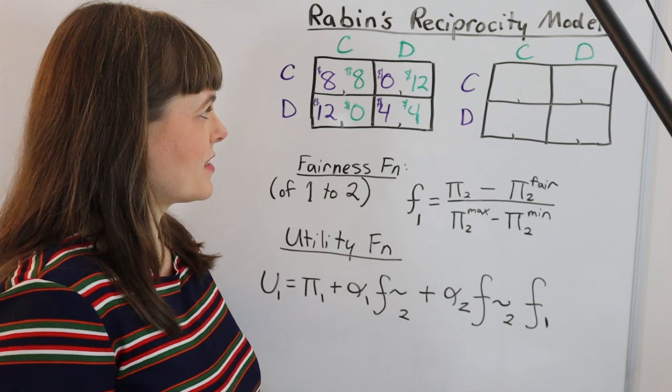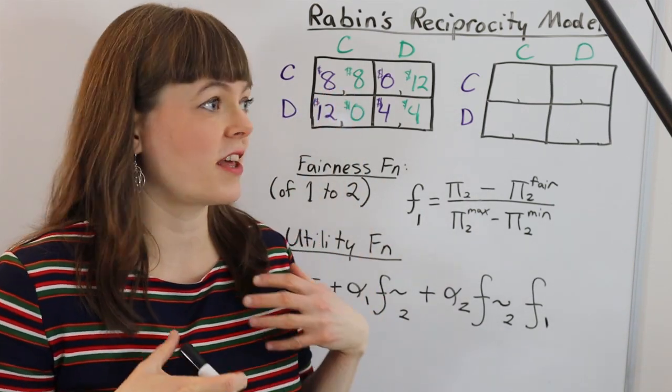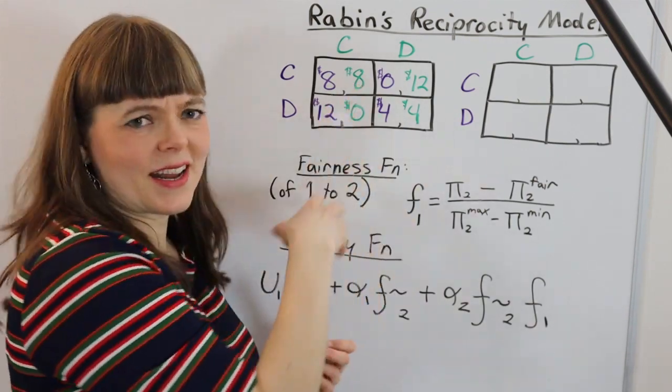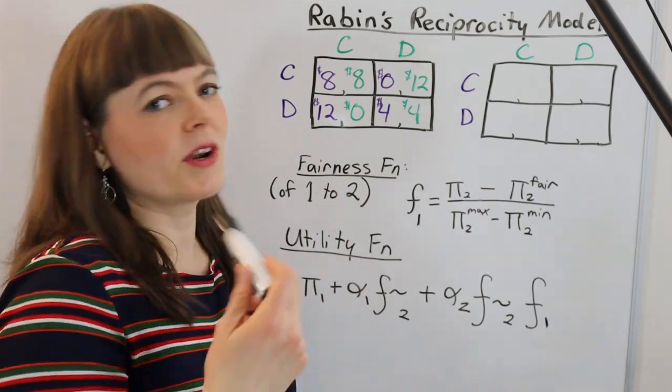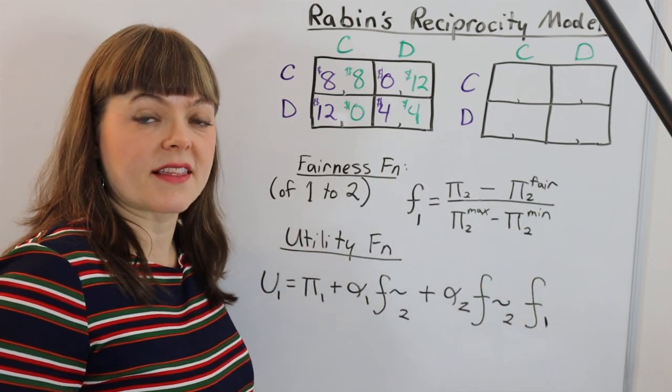And if we get a situation where they both cooperated, they might feel a generosity toward that other person such that they're going to get utility from sustaining cooperation or doing something generous to that person in the future. We know this is how people actually are. So this model is a way of formalizing that.